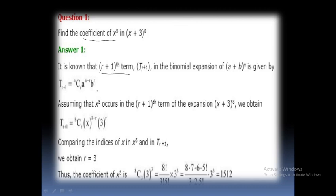The r+1th term, T_{r+1}, in the binomial expansion is given by T_{r+1} = nCr × a^(n-r) × b^r.